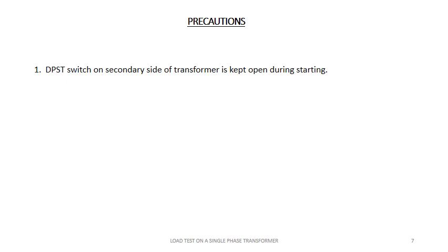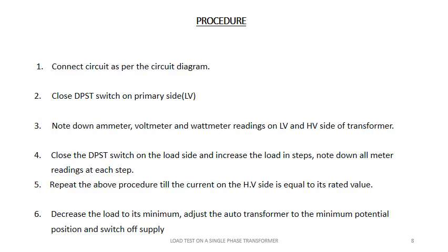Before going to the experiment, some precautions should be taken: the DPST switch on the secondary side of the transformer is kept open during the starting procedure. Connections are made as per the circuit diagram. Close the DPST switch on the primary side. Note down the ammeter, voltmeter, and wattmeter readings on the LV and HV side. Close the DPST switch on the load side and increase the load in steps. Note down all meter readings at each step. Repeat the procedure until the current on the HV side equals the rated value. Decrease the load to minimum. Adjust the autotransformer to the minimum potential position and switch off the supply.